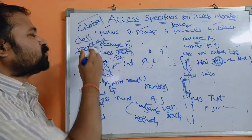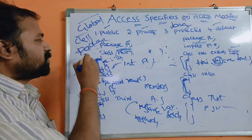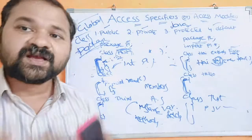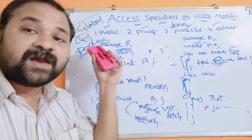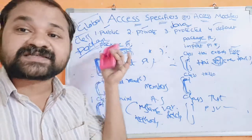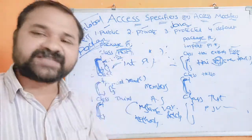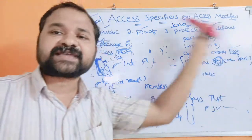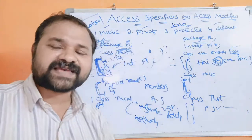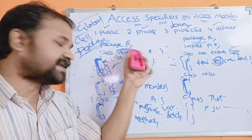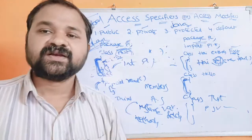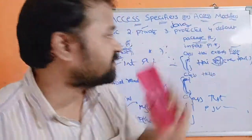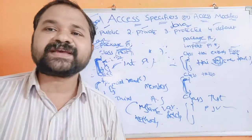To summarize the scope of each specifier: public member scope is global; private member scope is class scope; default member scope is package scope; and protected member scope is package plus child — meaning in another package, only child classes can access the members, while other classes cannot.